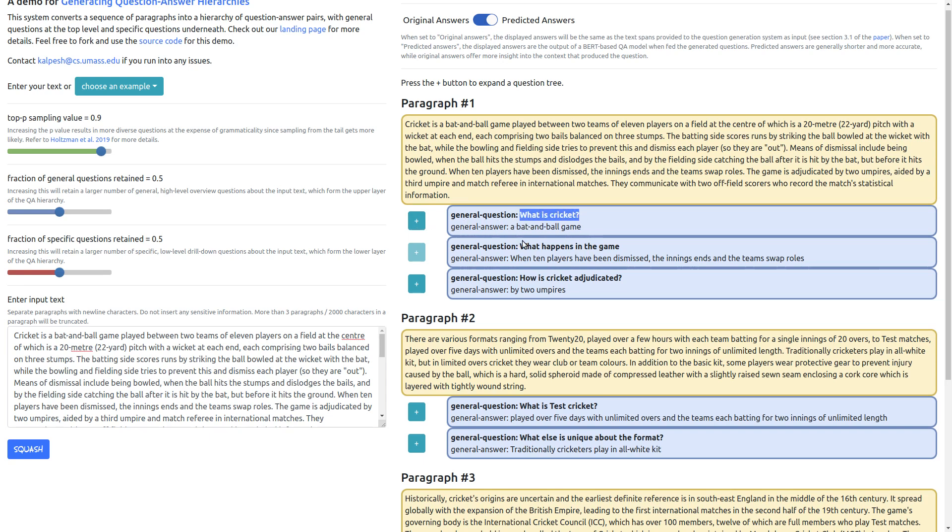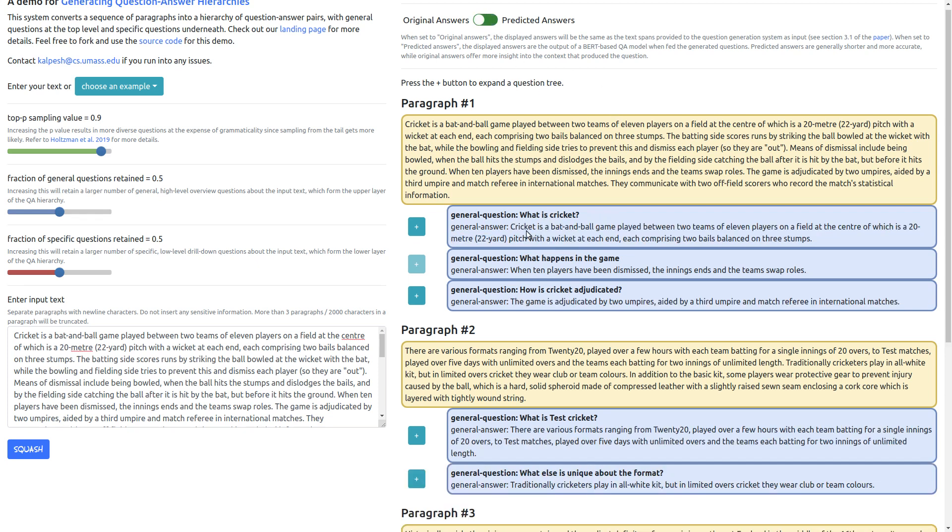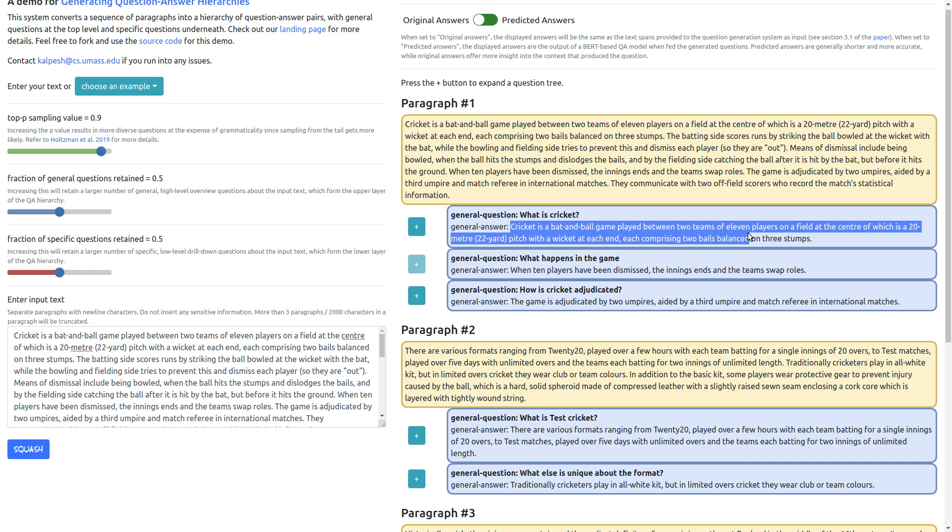So for example, for the first general question which is what is cricket, you have produced an answer like a bat and ball game. And if we switch back to the information retrieval style, they have retrieved the precise sentence here which is giving the answer.